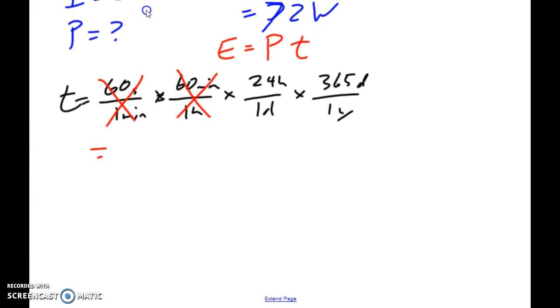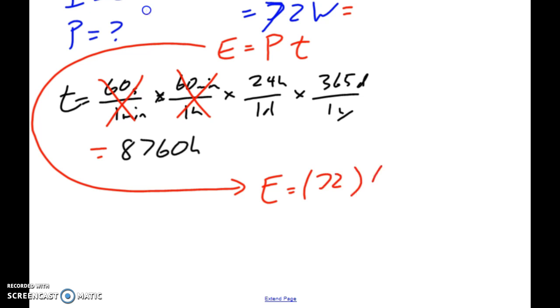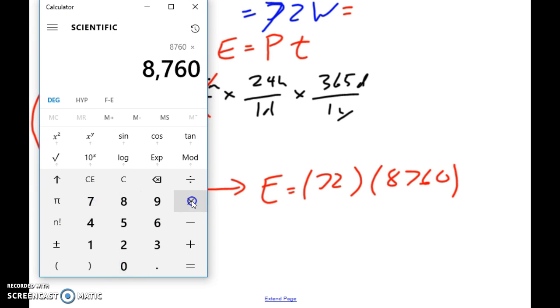So when we take that information and we plug it in, so energy is equal to - I forgot to mention we have our power at 72, so we have 72 watts and our time is 8760. Okay, so 8760 times 72. So what we use in this case is, this is going to work out to be 630,720 and this is considered watt hours. How do we go from watt hours to kilowatt hours? Well how do we go from meters to kilometers? We divide by a thousand. So that means our answer is going to be 6371 kilowatt hours.